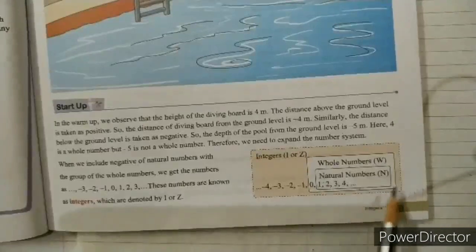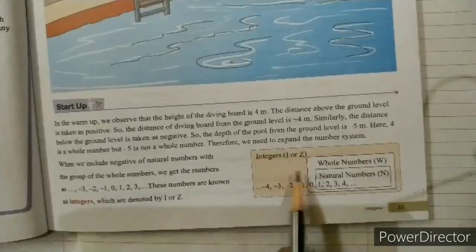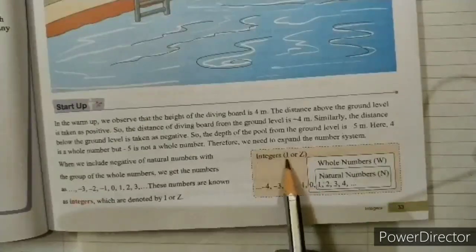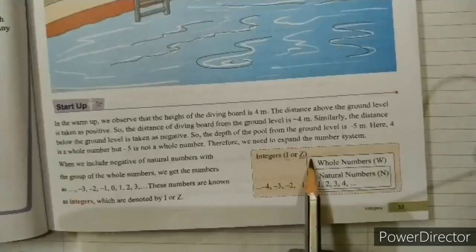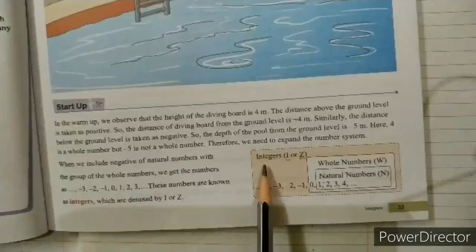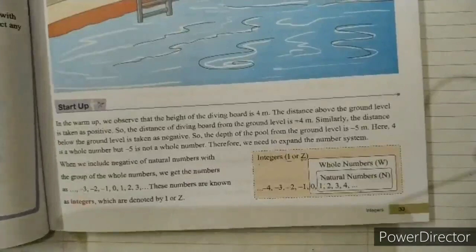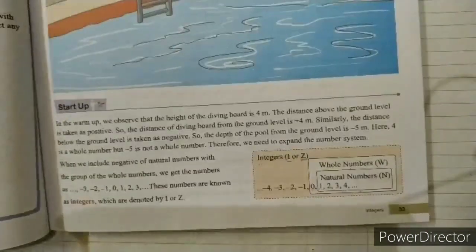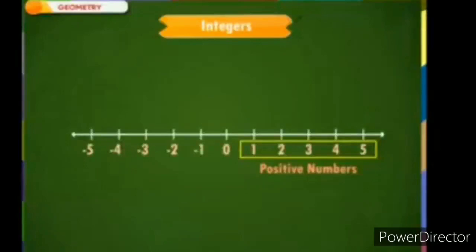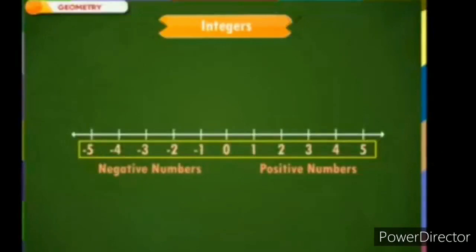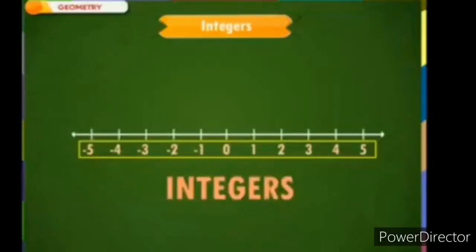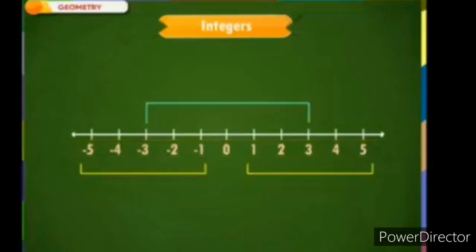Integers are represented by the sign I or Z. Using either of these signs you can represent integers. The first question in our mind is: what are integers? When all negative and positive numbers including 0 are together, that collection is known as integers.